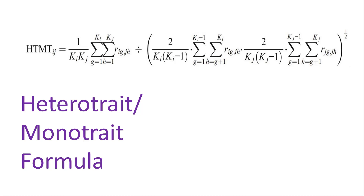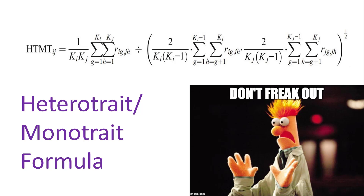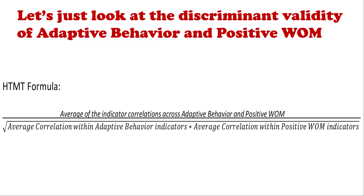The formula to calculate the heterotrait-monotrait ratio looks intimidating at first, but it's not that bad. Breaking it down: the numerator is the average of the heterotrait correlations — you take all the heterotrait correlations and average them. Then you divide that by the square root of the average monotrait correlation for adaptive behavior multiplied by the average monotrait correlation for positive word of mouth. Let's go back to the example to make this clearer.